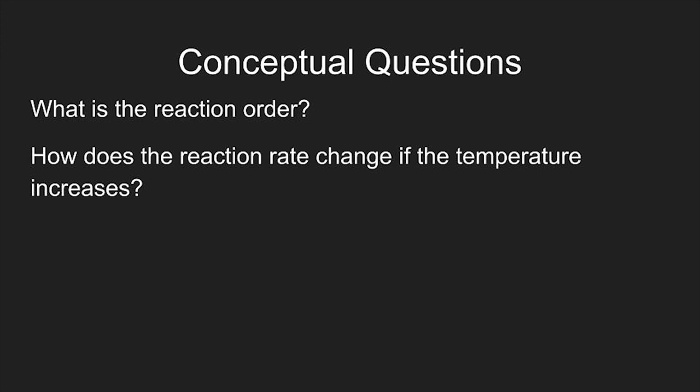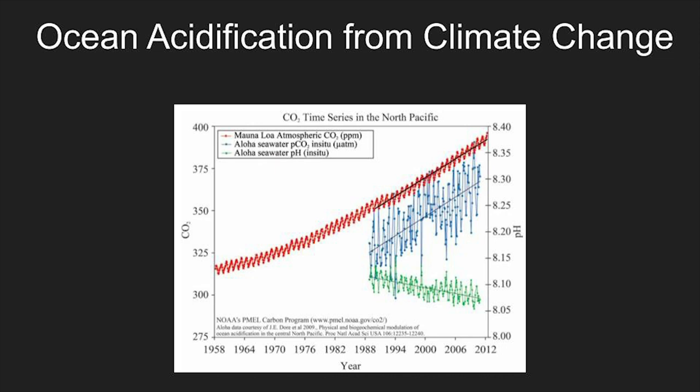In this goodie bag, we will be exploring the application of reaction rates in ocean acidification due to climate change and what that means for many sea animals. As you can see from this graph, there is a strong positive correlation between increasing carbon dioxide levels in the atmosphere, marked in red, and decreasing pH in the ocean, corresponding to increasing acidity, as seen in green.